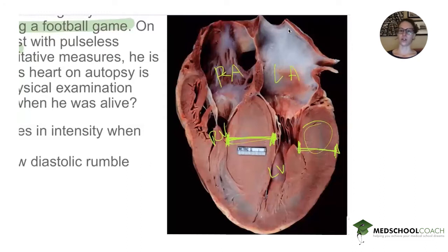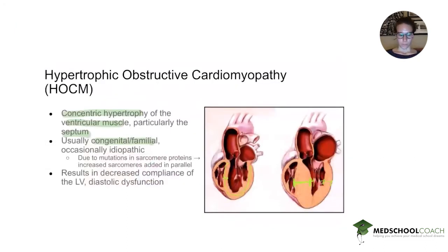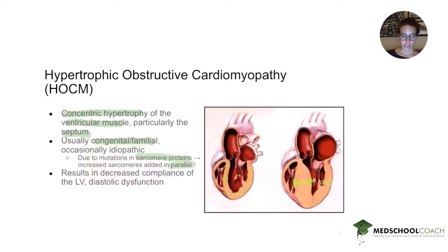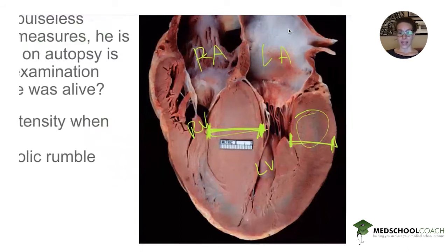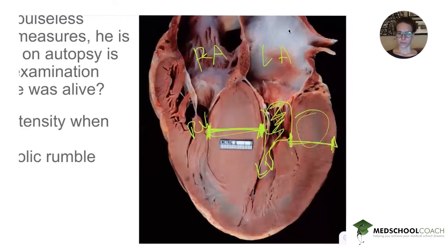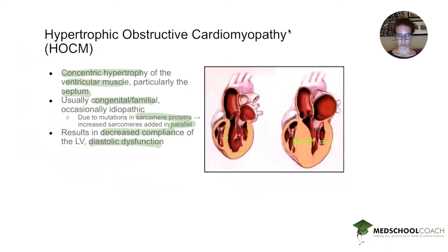There is no reason to believe this 17-year-old had chronic hypertension — and his heart doesn't look like that anyway; it looks like HOCM. HOCM is caused by a mutation in sarcomere proteins, which causes increased sarcomeres to be added in parallel rather than in series, giving you that muscle thickening. This results in decreased compliance of the left ventricle and diastolic dysfunction — the heart is so thick it cannot relax, and that small left ventricular chamber cannot fill well.